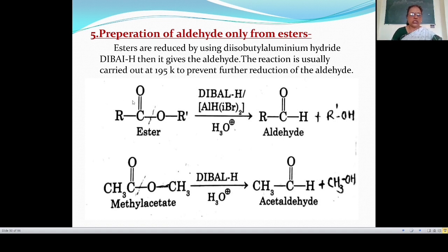These esters are reduced by using diisobutyl aluminium hydride, written as Al(iBu)₂H. Two hydrogen atoms are used to reduce this ester. One hydrogen atom is attached to the carbon atom to give the aldehyde, that is R-C(=O)-H. And the O-R group is converted to an alcohol group, where a hydrogen atom is attached to the oxygen atom to give R'-OH, meaning alcohol.